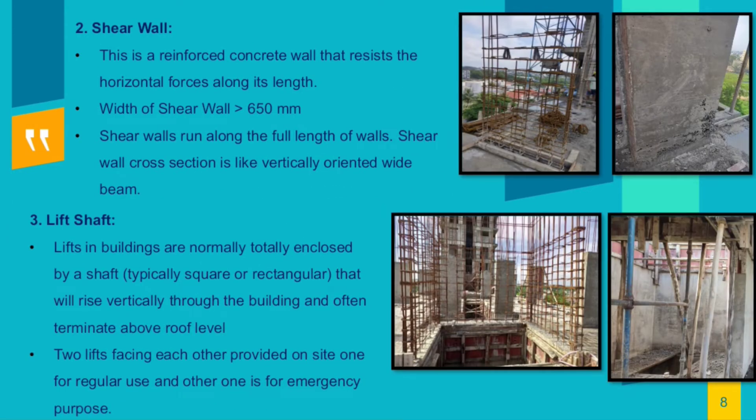Secondly, shear wall: this is a reinforced concrete wall that resists the horizontal forces along its length. Shear walls run along the full length of walls. The shear wall cross section is like a vertically oriented wide beam. Third, lift shaft: lifts in buildings are normally totally enclosed by a shaft, typically square or rectangular, that rises vertically through the building and often terminates above roof level. Two lifts facing each other were provided on site — one for regular use and another for emergency purpose.